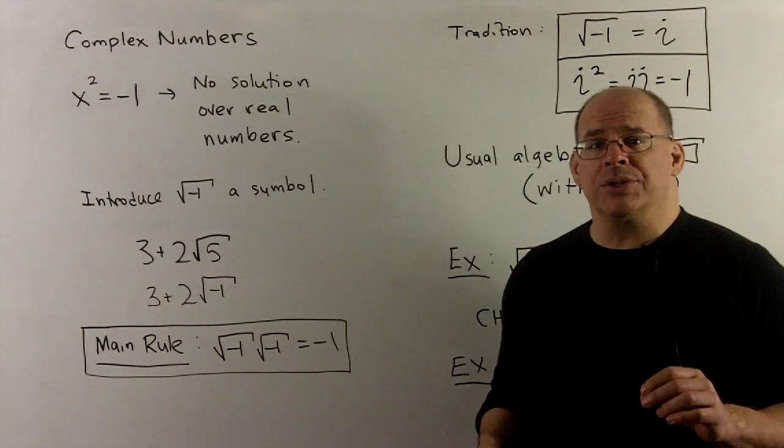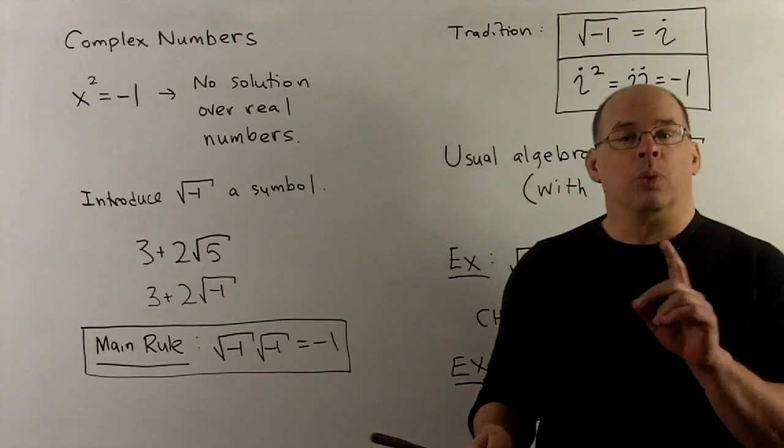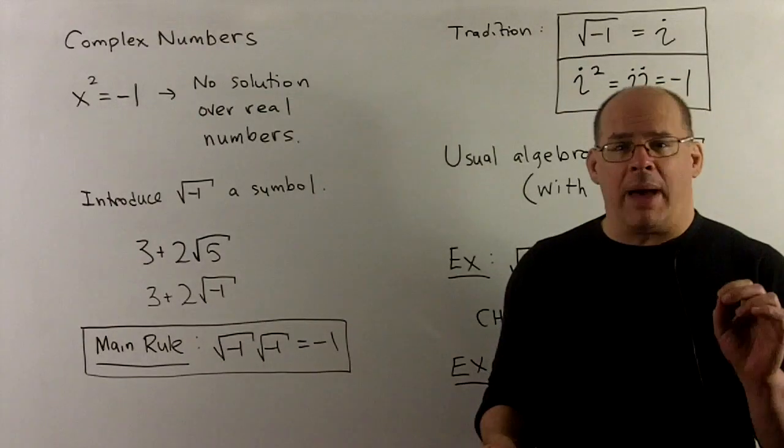For our final section on radicals, we consider the complex numbers. Where this story begins, we go back to the equation x squared equal to minus 1.